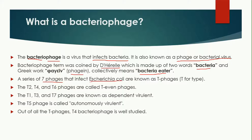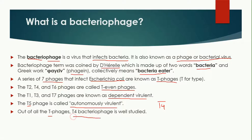There are seven different phages used to infect Escherichia coli, known as T-phages. These include T2, T4, and T6, which are known as T-even phages; T1, T3, and T7, which are known as dependent virulent; and T5, which is known as autonomously virulent. Of all these, T4 bacteriophage is the most well-studied.